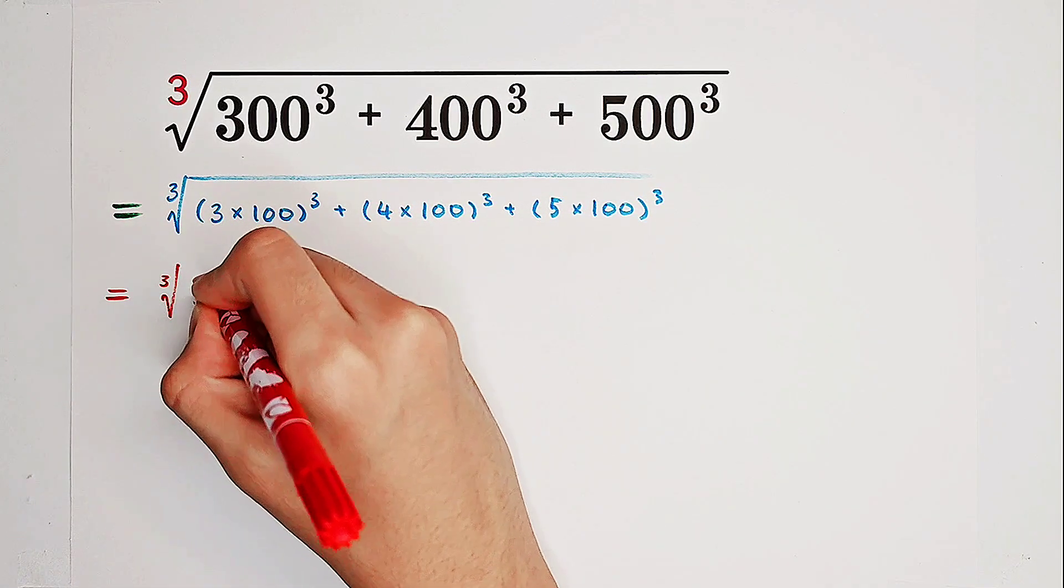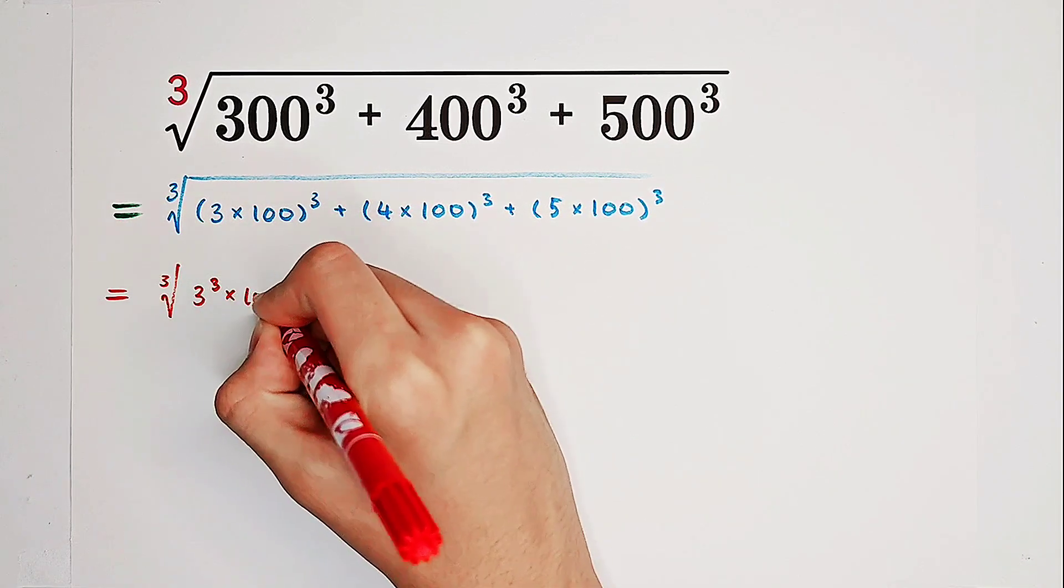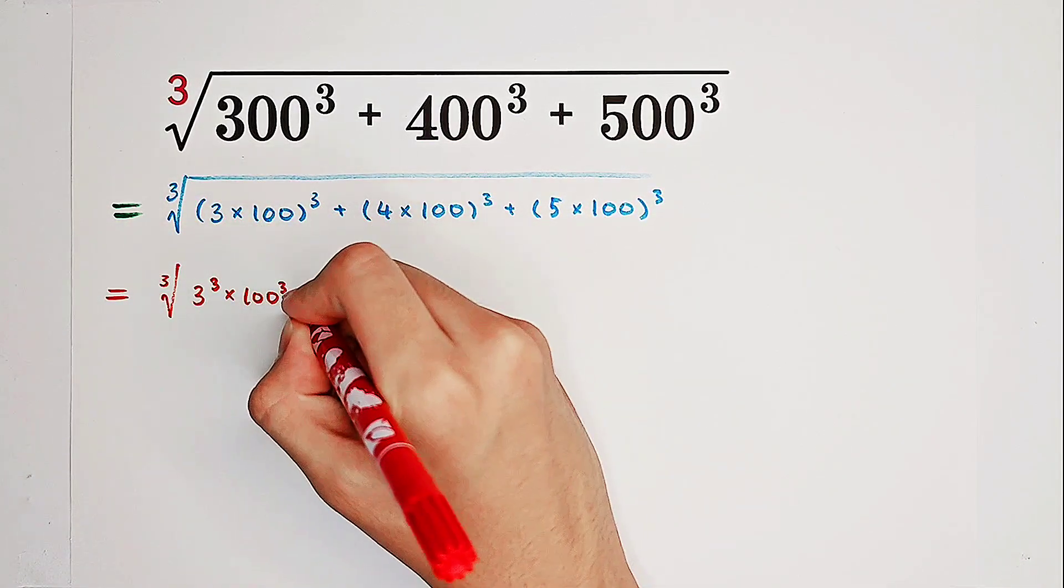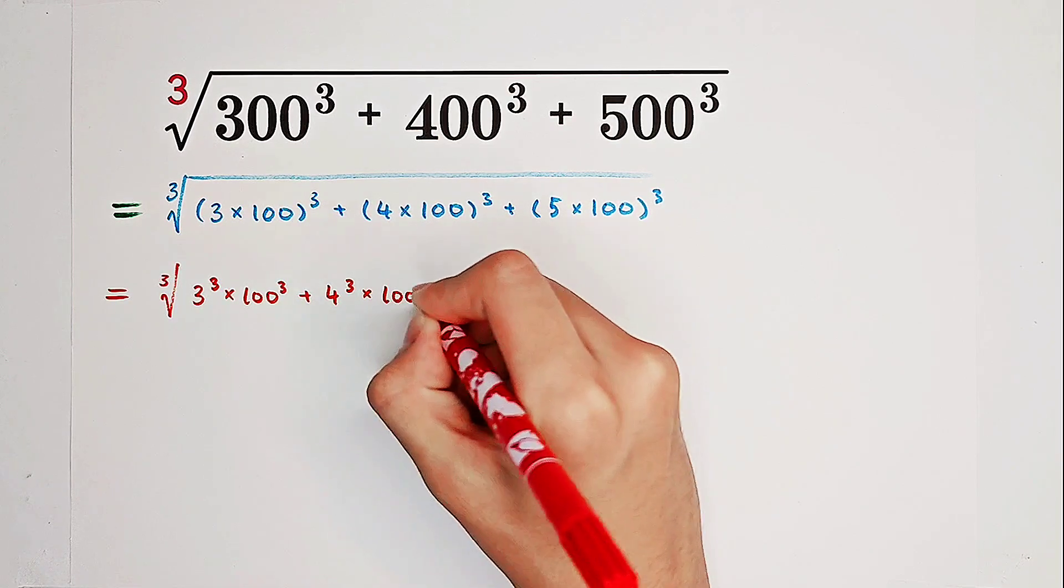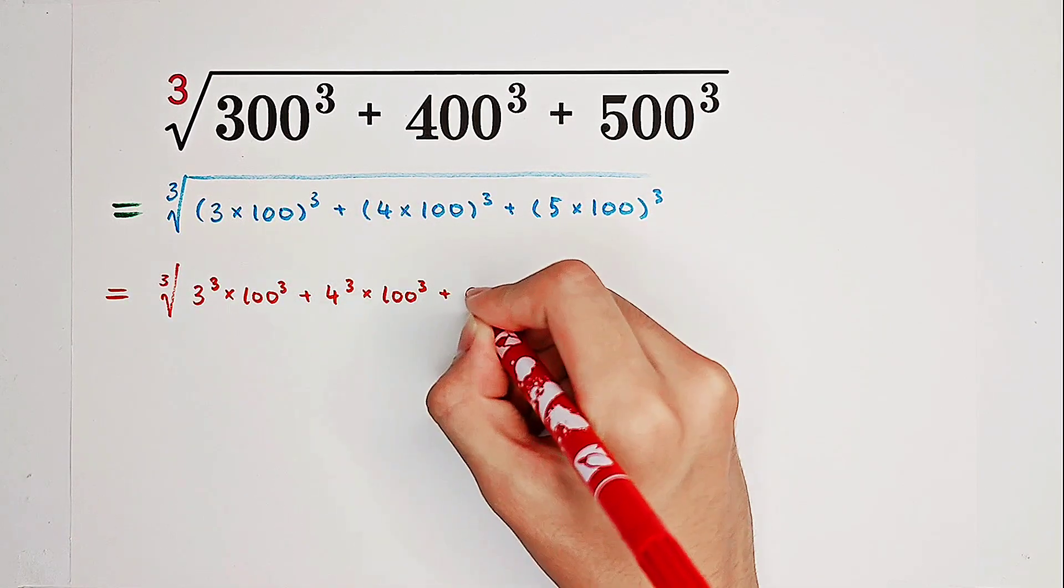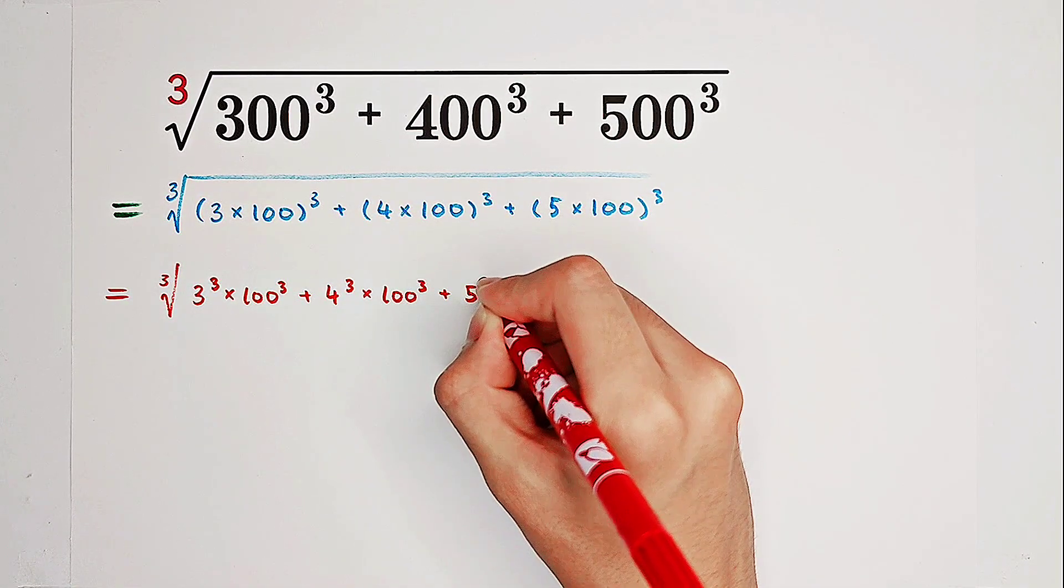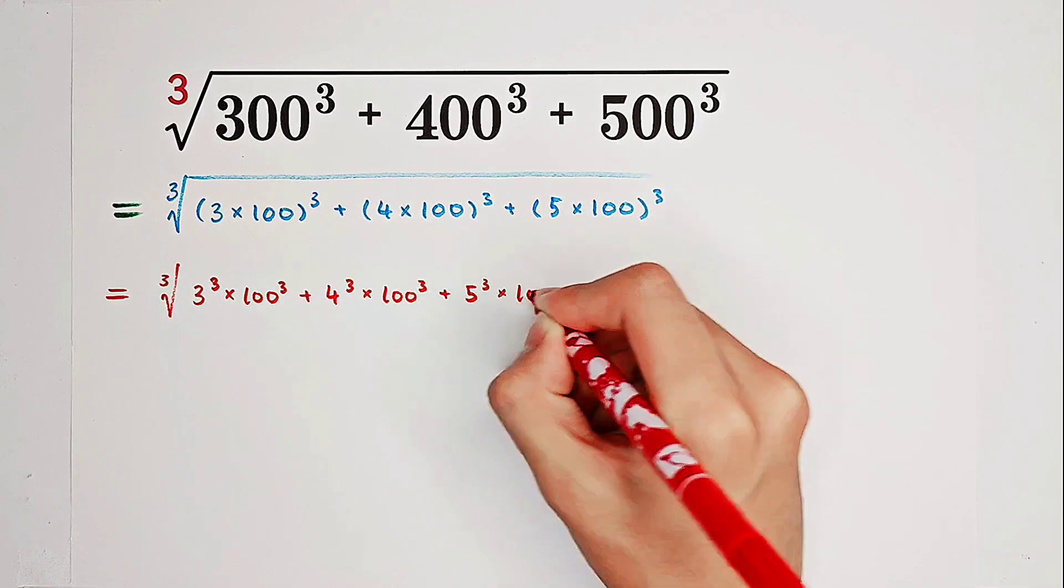Now, 3 cubed times 100 cubed is this one, plus 4 cubed times 100 cubed is this one. Now this one is going to be 5 cubed times 100 cubed.